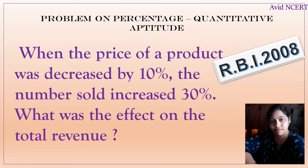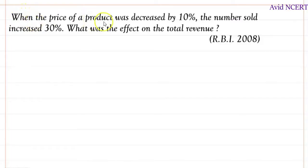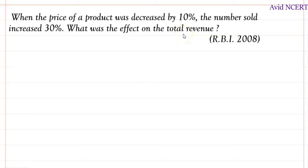Hello viewers, welcome to my channel, this is Gita. When the price of a product was decreased by 10 percent, the numbers sold increased by 30 percent. What was the effect on the total revenue?